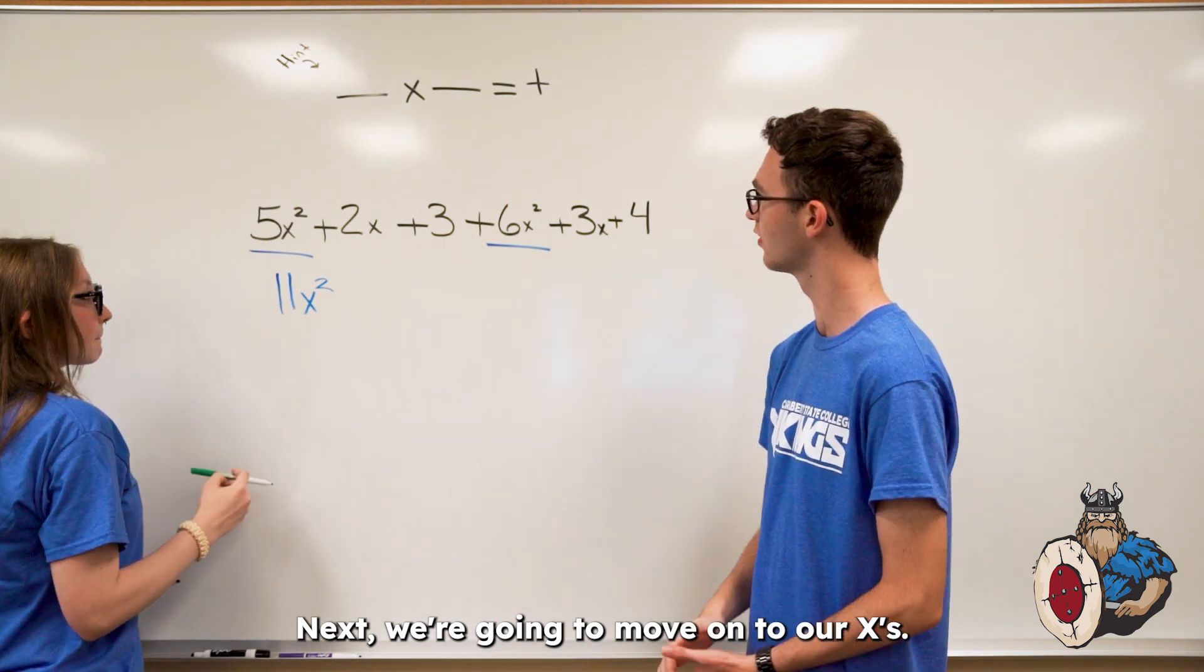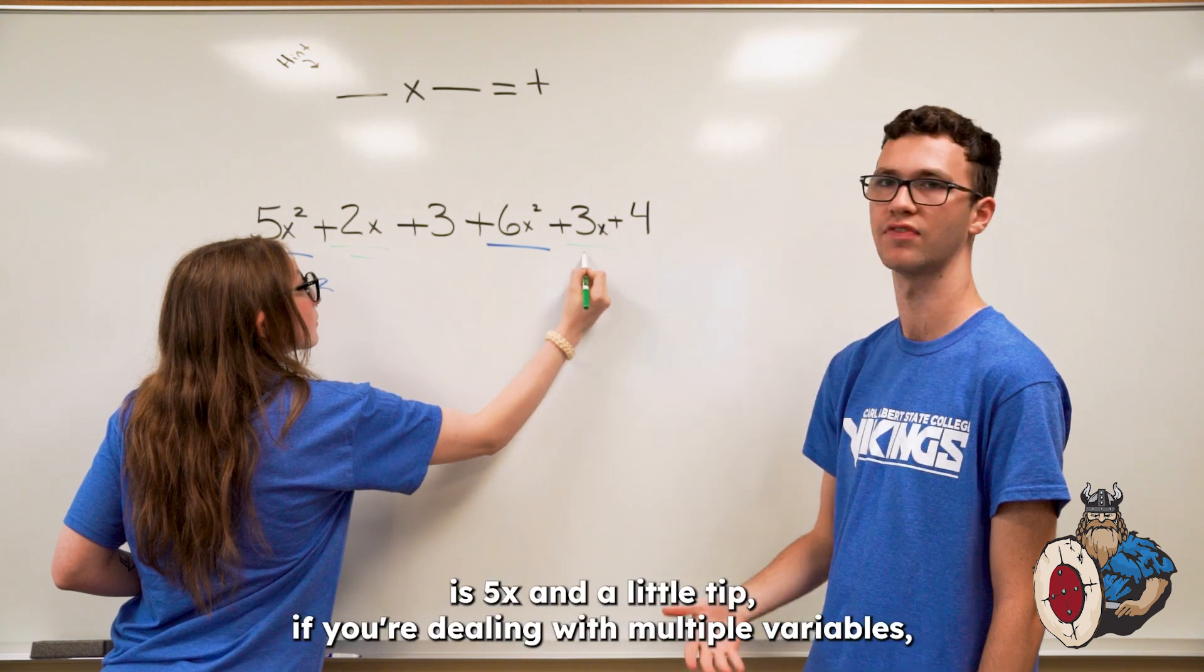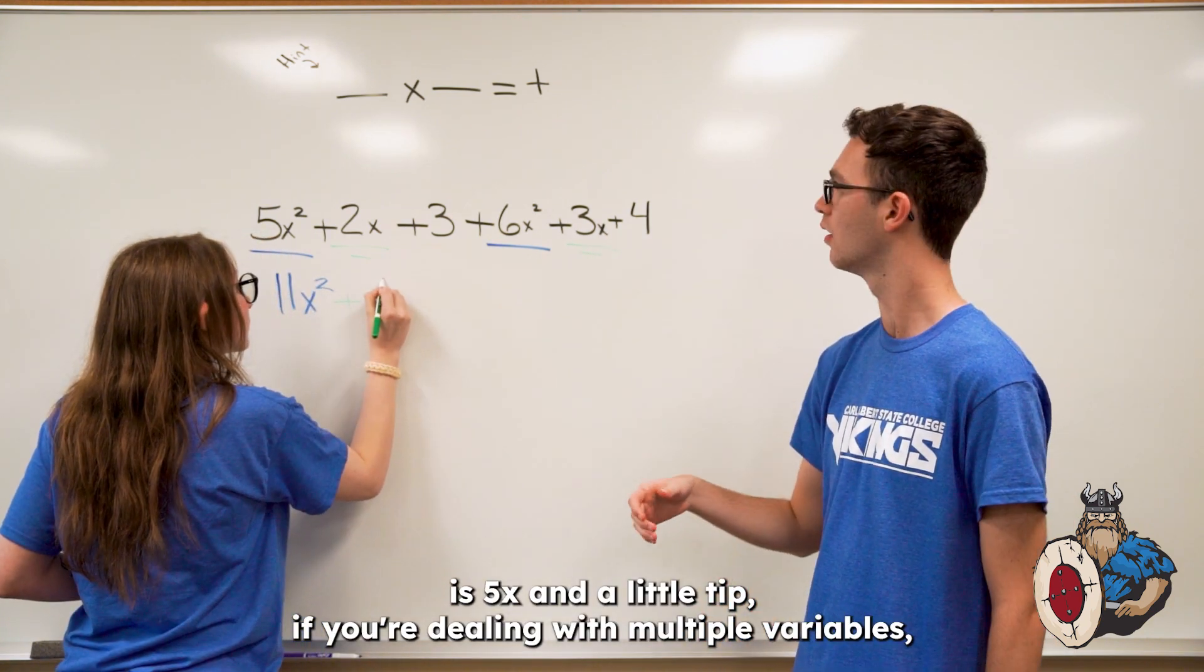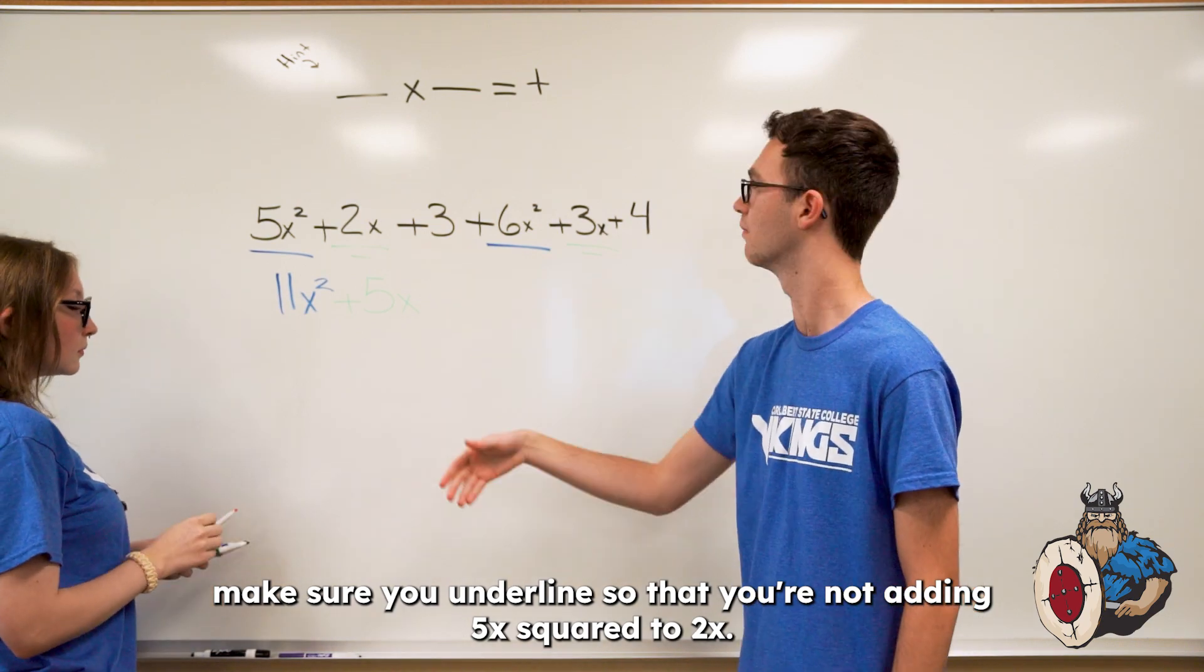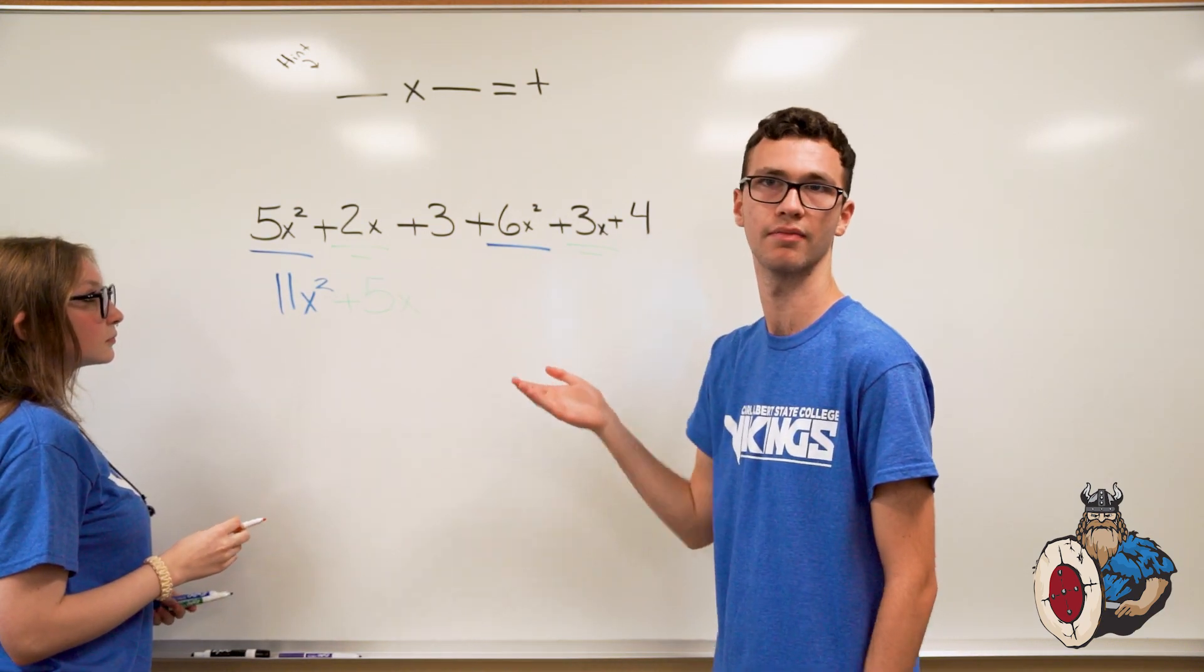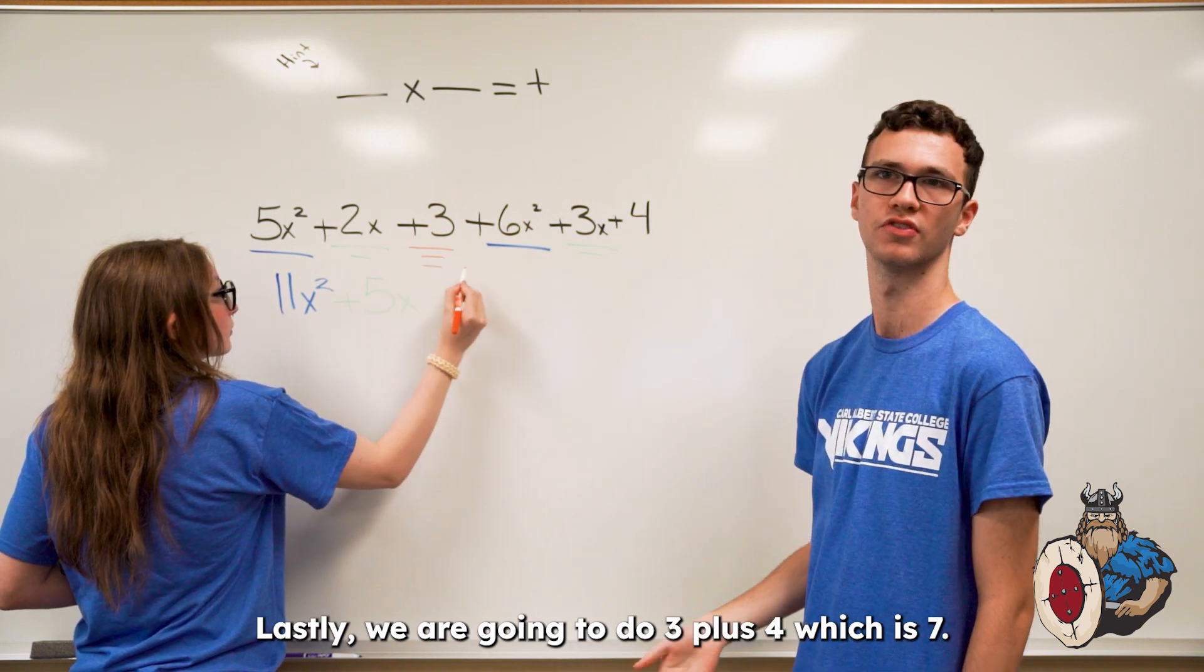Next, we're going to move on to our x's. 2x plus 3x gives us 5x. And a little tip, if you're dealing with multiple variables, make sure you underline them, so you're not adding 5x squared to 2x. Lastly, we're going to do 3 plus 4, which is 7.